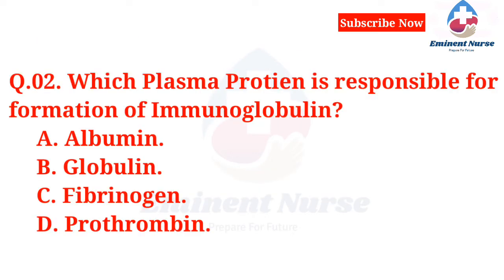Which plasma protein is responsible for formation of immunoglobulin? A. Albumin. B. Globulin. C. Fibrinogen. D. Prothrombin.